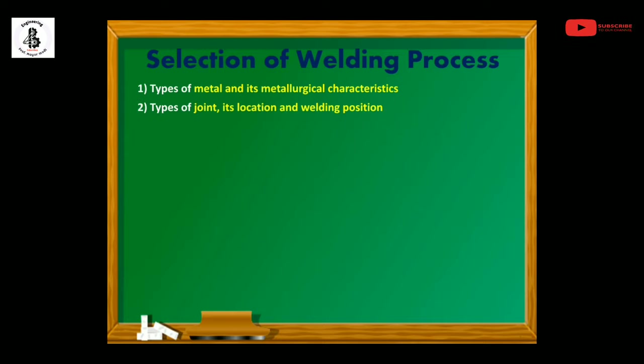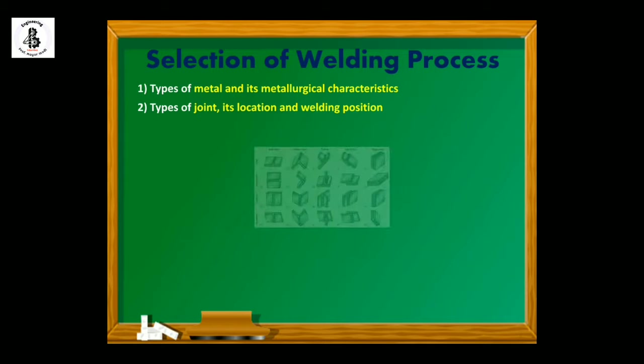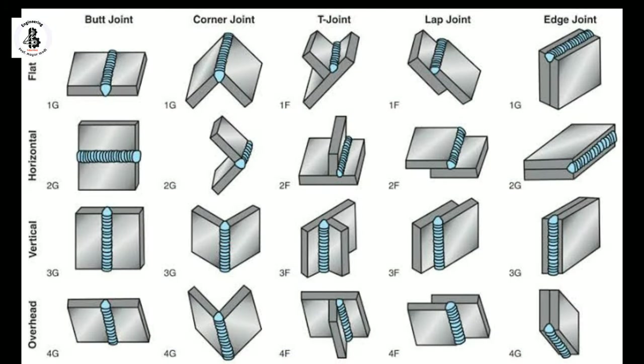The second factor is types of joints, their location, and welding positions. Basically in the welding process, there will be butt joints, lap joints, corner joints, T-joints. Location-wise, it will be the 1G position, 2G position, 3G position, and 4G position. And position-wise: flat position, horizontal position, vertical position, and the difficult one — overhead position.